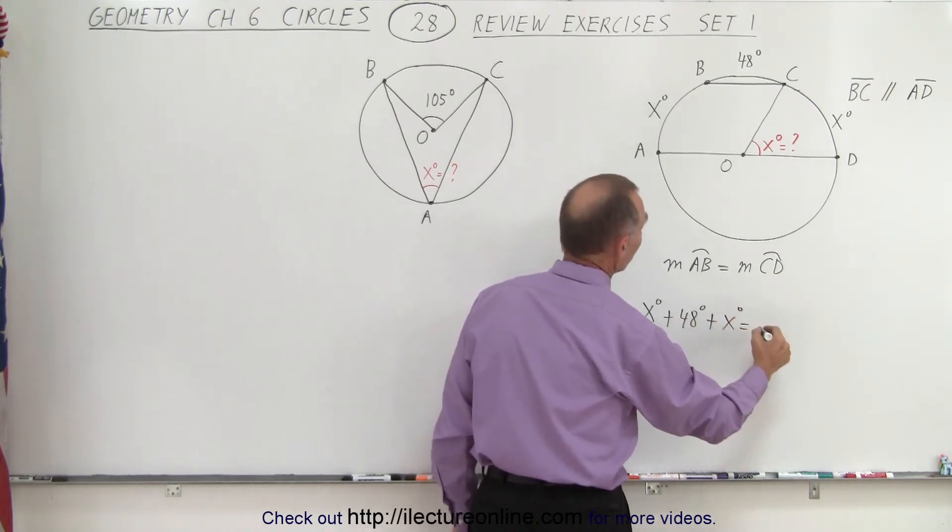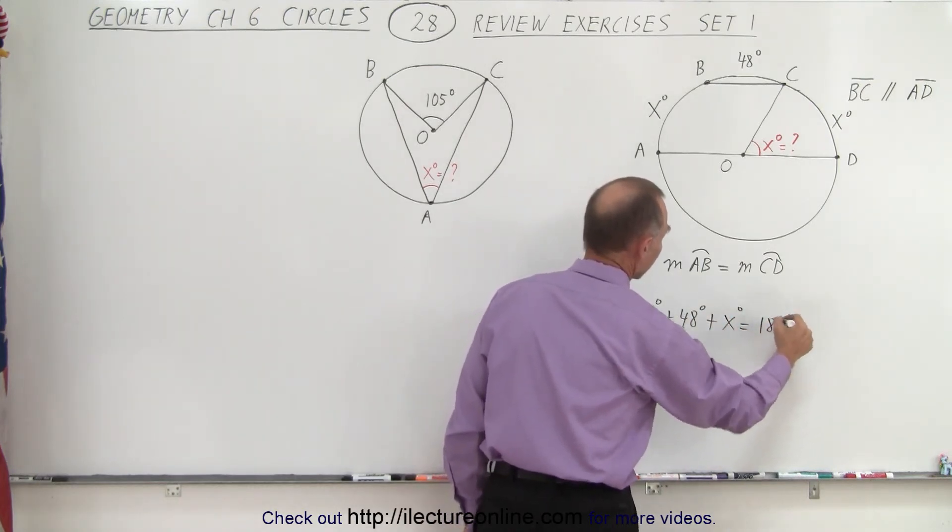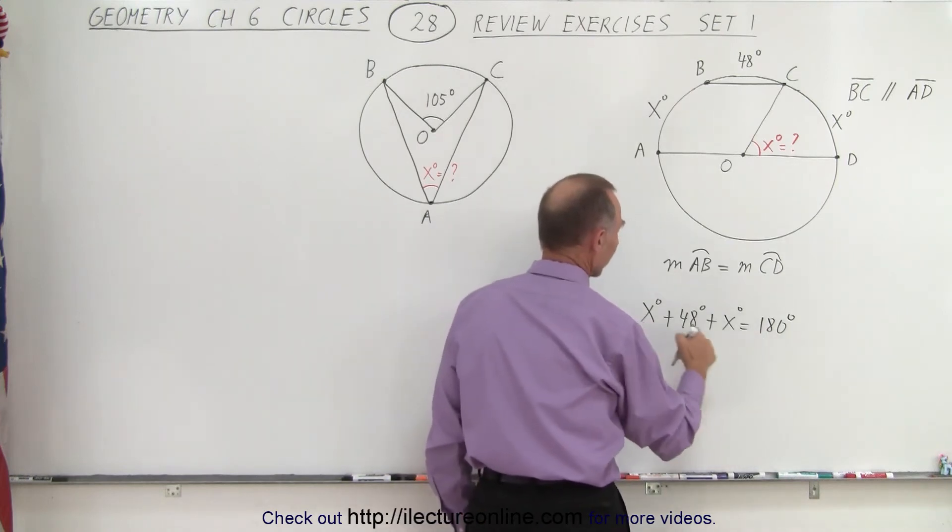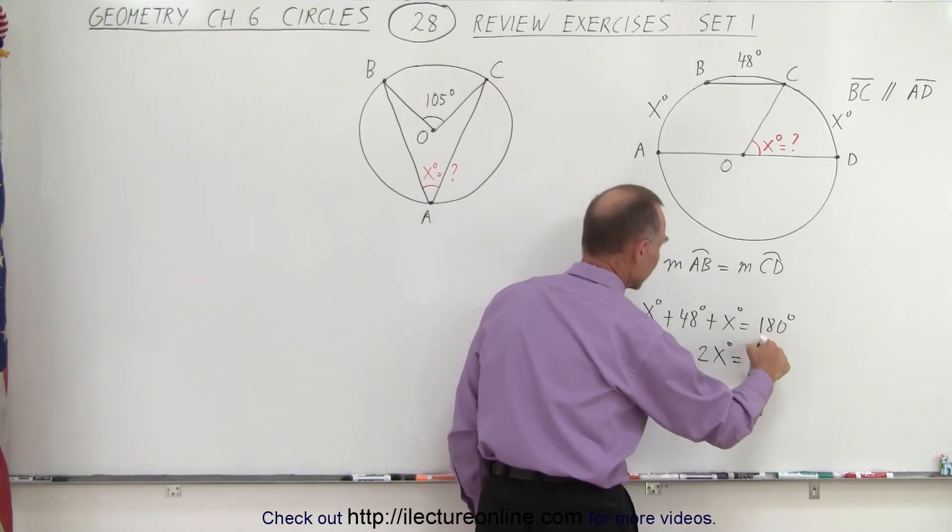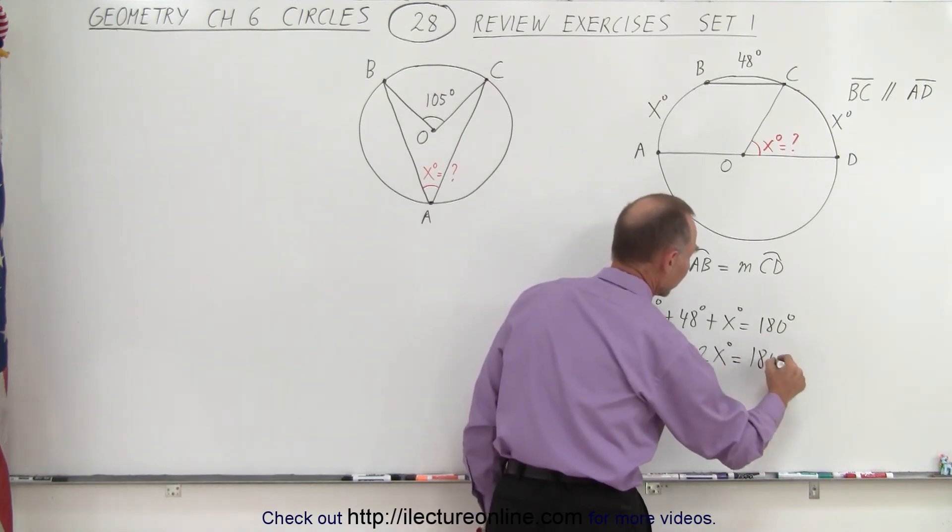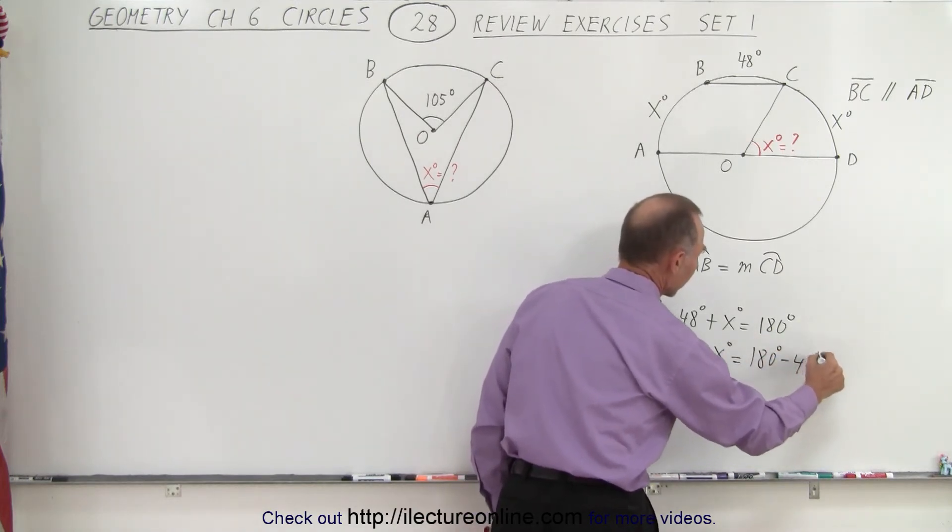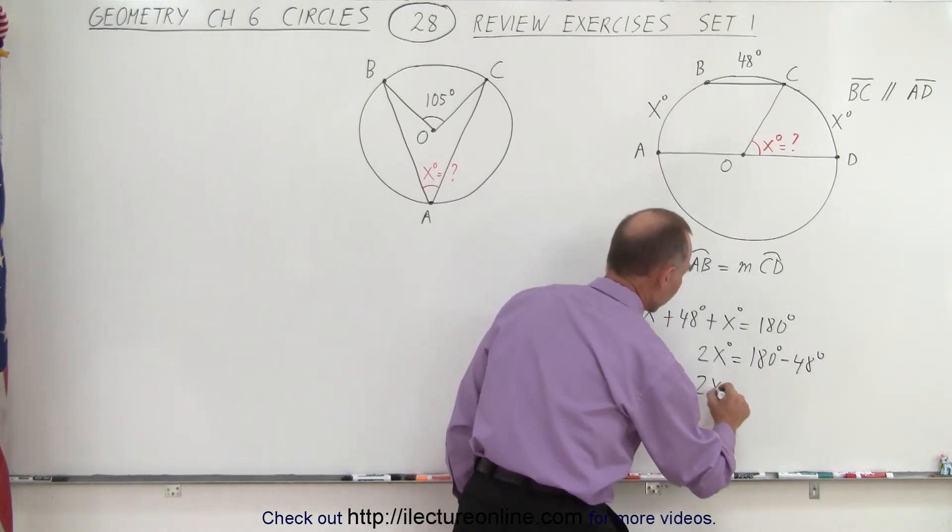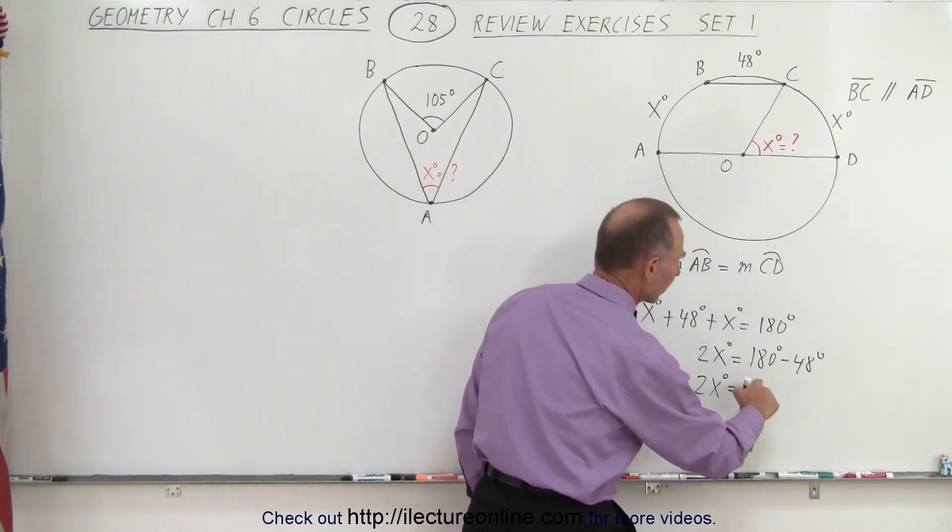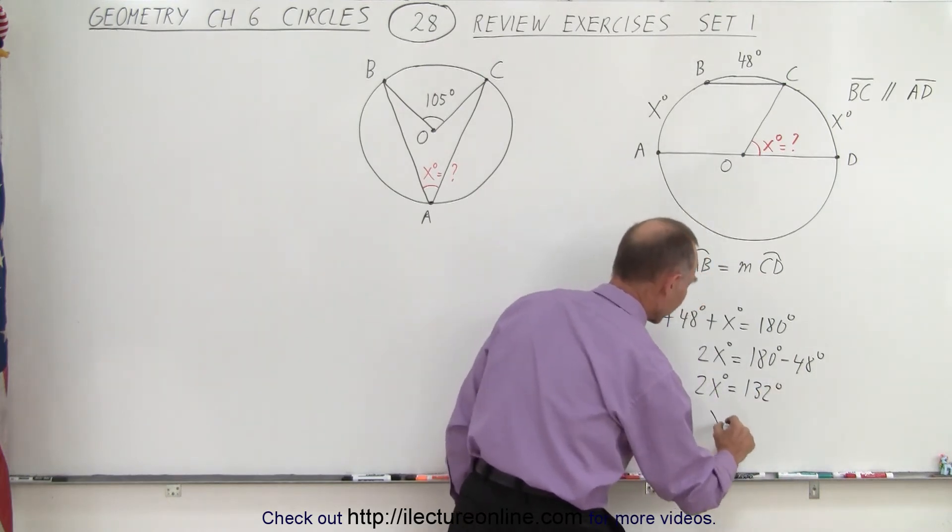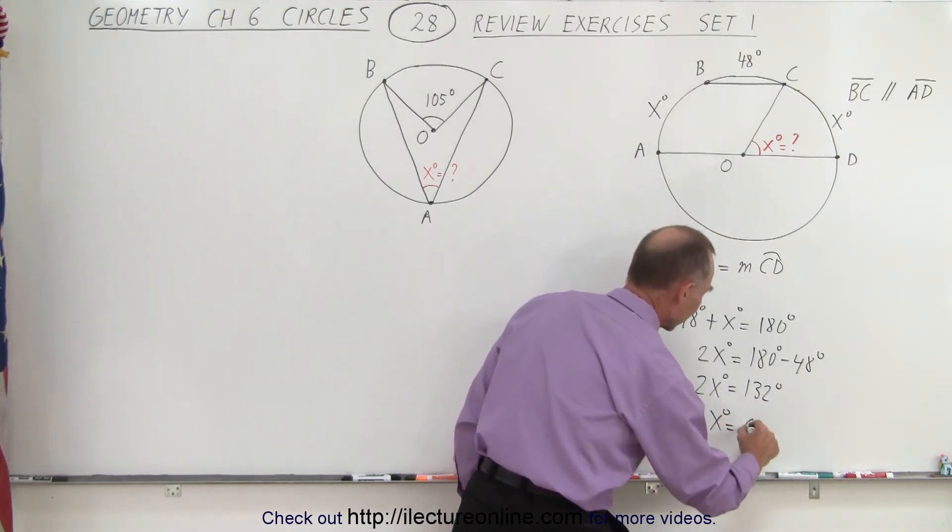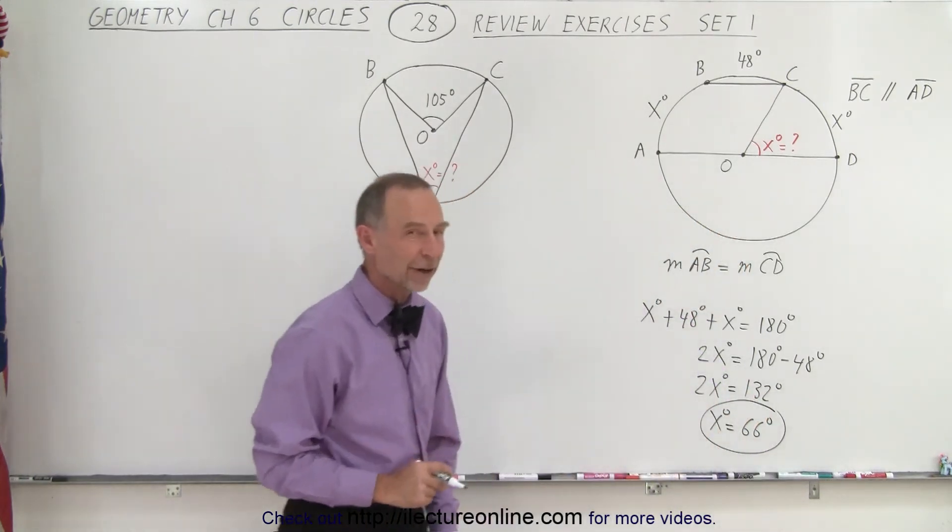Subtracting 48 from both sides, adding the two X's together, we get 2X degrees is equal to 180 minus 48 degrees, or 2X degrees is equal to 132 degrees. So therefore divide both sides by 2 and we get X degrees equals 66 degrees. That's how we find the value for X.